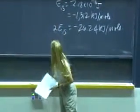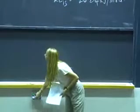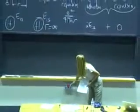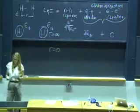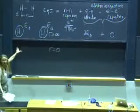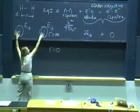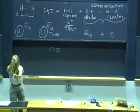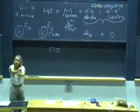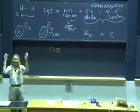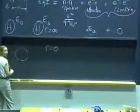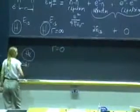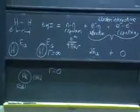Now we have to calculate the energy of interaction at R equals zero. When R equals zero, we have two hydrogen nuclei right on top of each other. That means the charge on the nucleus is Z equal to 2 — it looks like we have a helium nucleus — with electron number one around it and electron number two around it. That looks like a helium atom.